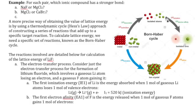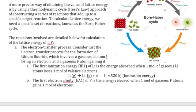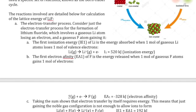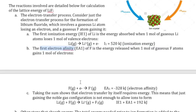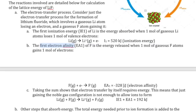We then take all those atoms and convert them to the respective ions. The lithium atom is converted to a lithium ion by losing an electron — that's the first ionization energy for lithium, an endothermic process of 520 kJ. For fluorine, we add an electron to make it an anion — that's the electron affinity energy, which is −328 kJ, an exothermic process.